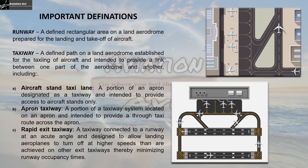Next is the apron taxiway. It is a portion of the taxiway system located on an apron and intended to provide a through taxi route across the apron. As you can see, this part of the taxiway which provides thorough access throughout the entire apron is the apron taxiway.